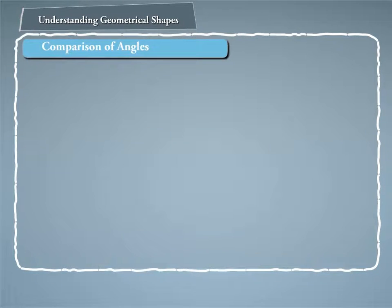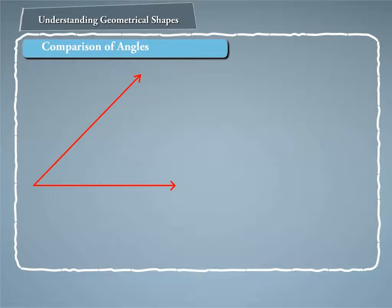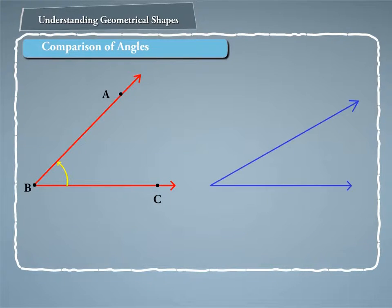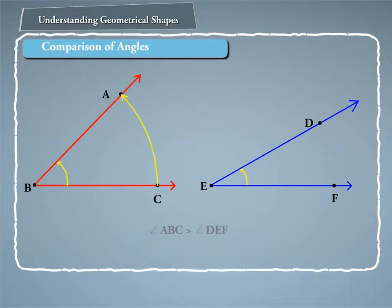Comparison of angles. As you can see in the figures, angle ABC is greater than angle DEF because the magnitude of angle ABC is greater than the magnitude of angle DEF.